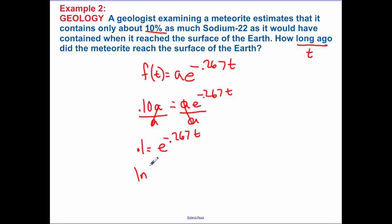Now I do my natural log. Natural log of 0.1 is equal to what my exponent is, and solving for t, 8.634 years. So it's using the past equation in this example.